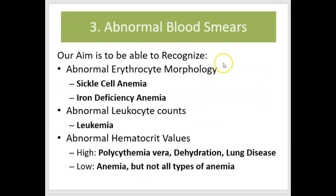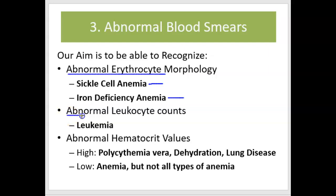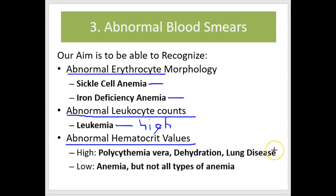Now let's look at some abnormal blood smears. Our goal is to be able to recognize abnormal erythrocytes seen in sickle cell anemia and iron deficiency anemia, look at abnormal smears that show high and low leukocyte counts — specifically leukemia, which has very high white blood cell counts — and look at hematocrit values that are abnormal and determine whether they are high or low.